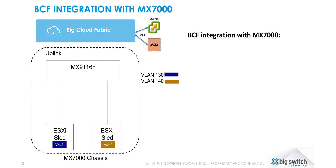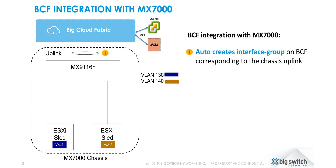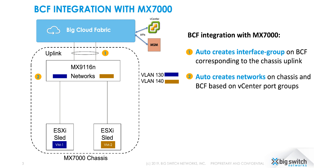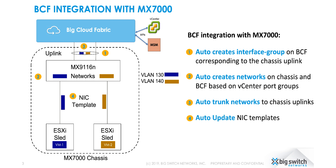VM1 in VLAN 130 and VM2 in VLAN 140 are running on the sleds as shown. In order to establish communication between the VMs, BCF will automatically do the following: auto-detect where the chassis uplinks connect to the BCF and create an MLAT, automatically create the networks on the chassis, auto-trunk the networks on the chassis uplink towards the BCF, and automatically update the VLANs in the NIC templates and provide visibility into the MX7000 chassis from the BCF GUI.